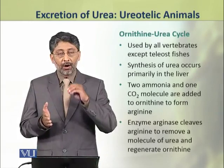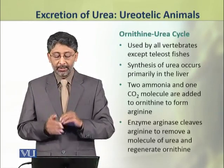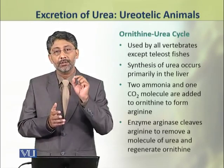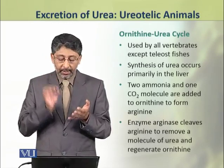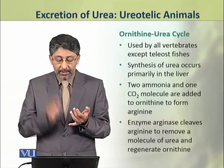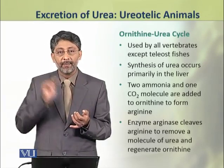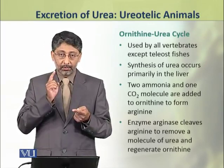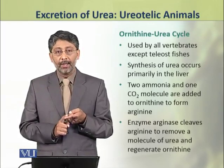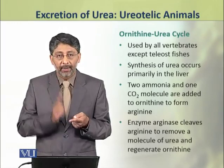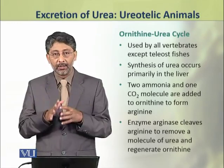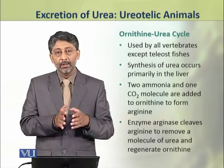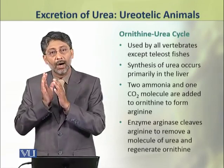The ornithine urea cycle is used by all vertebrates except the teleost fishes. In this method, synthesis of urea occurs primarily in the liver. Two molecules of ammonia and one molecule of carbon dioxide are added to an ornithine molecule, which is then converted into arginine.